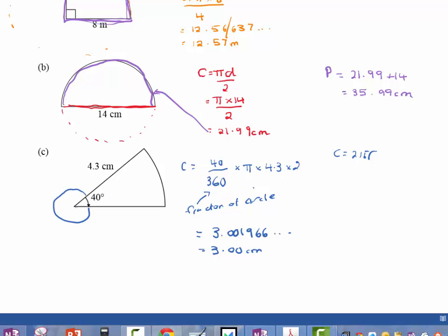Now remembering again, that's only this curved part here. And we're asked to find perimeter, and so perimeter equals the curved part, which is 3.00 plus the other two sides.